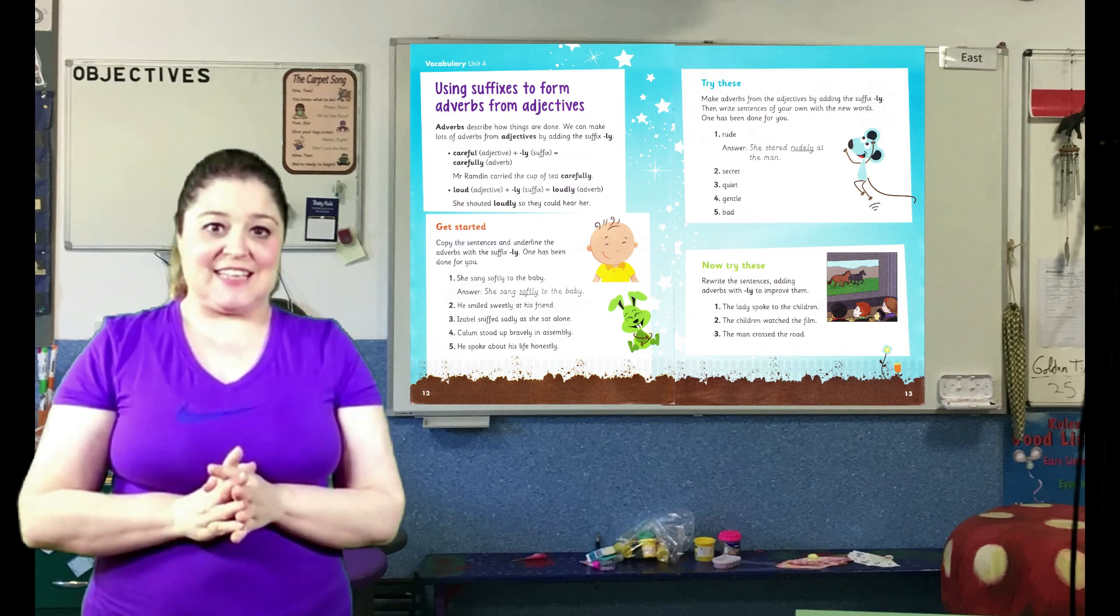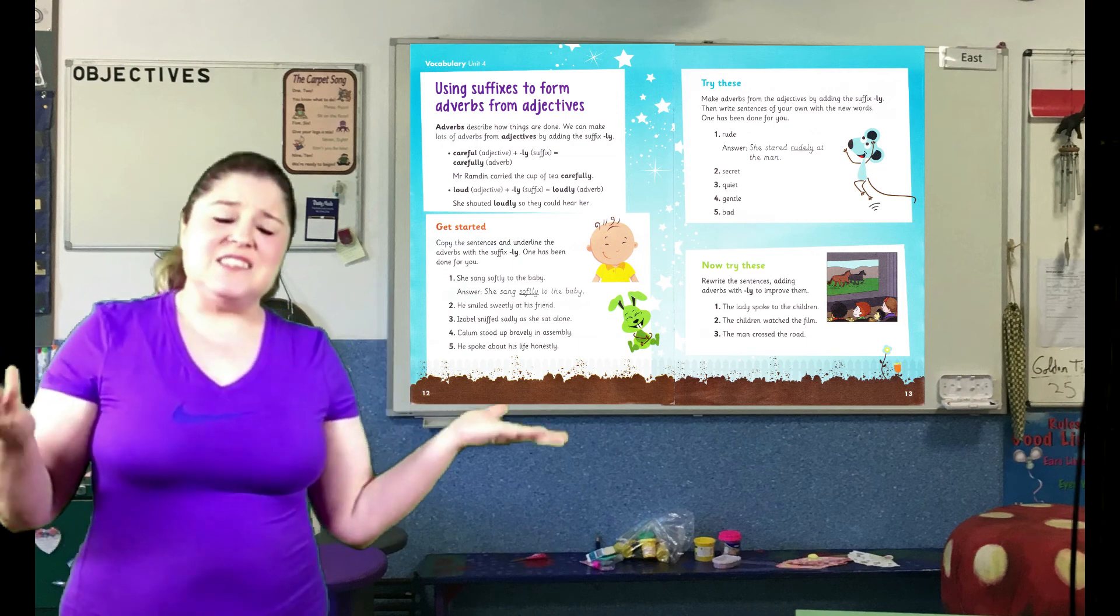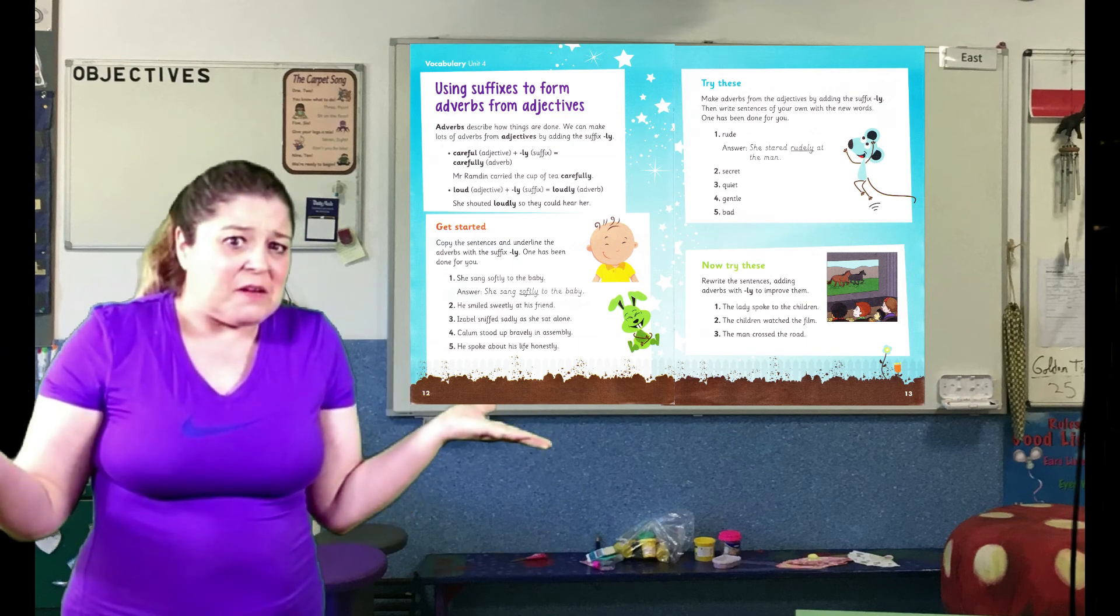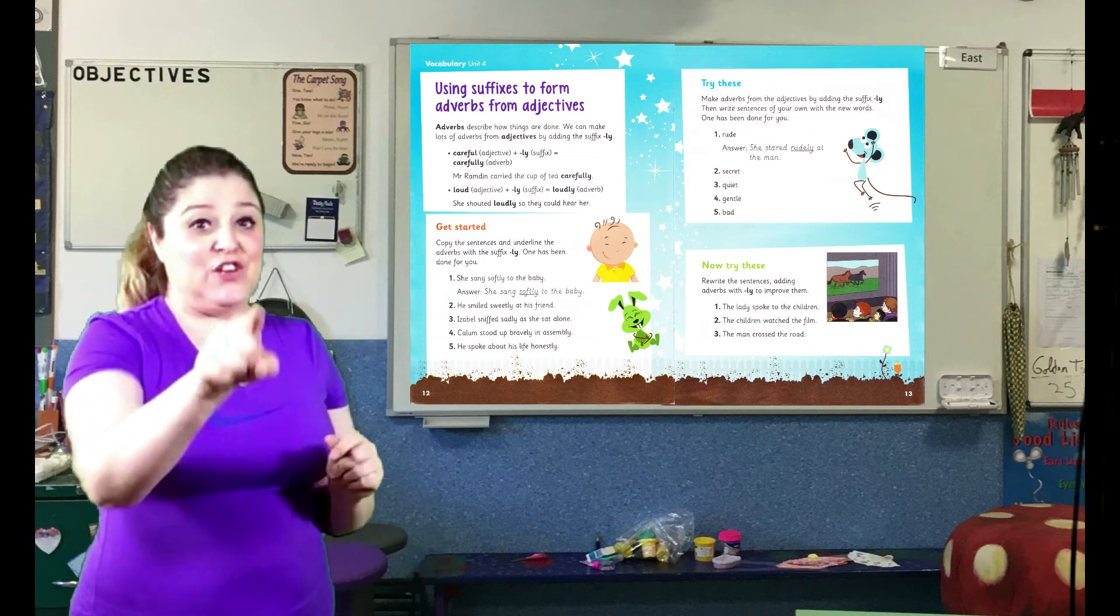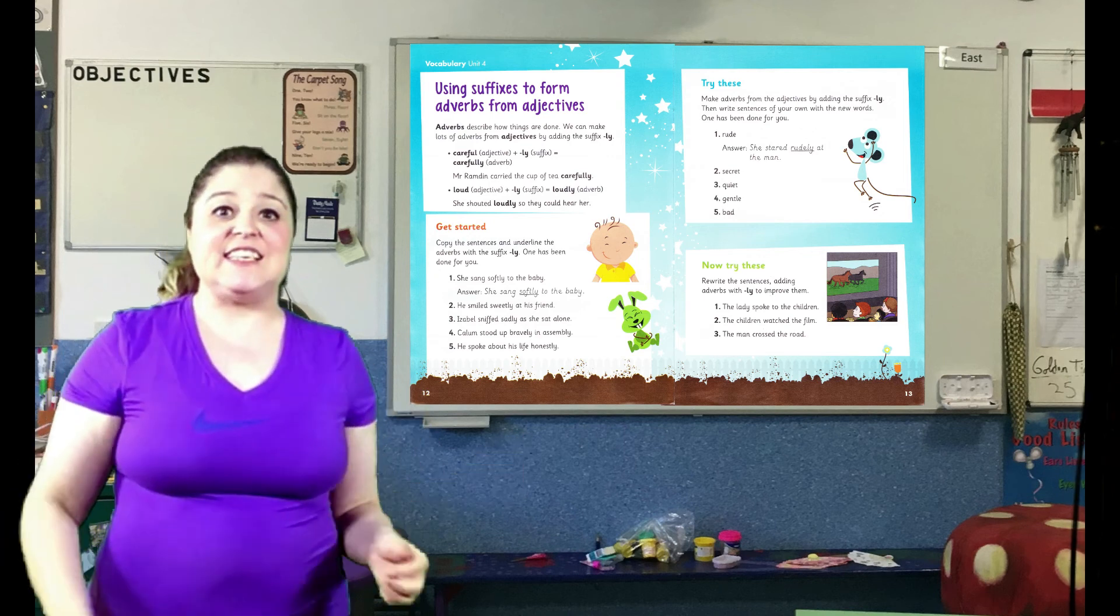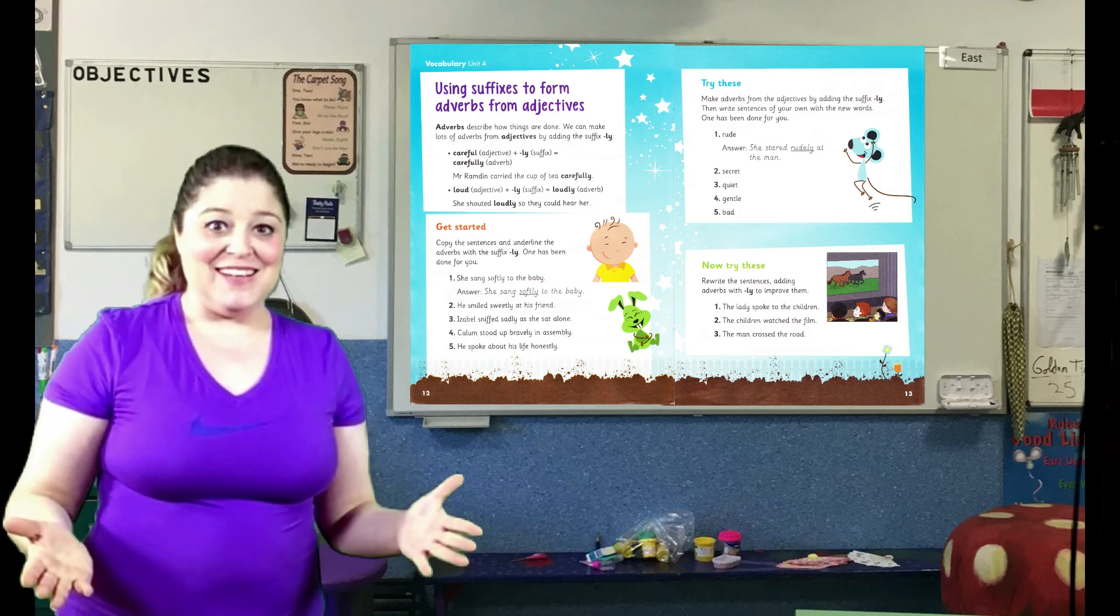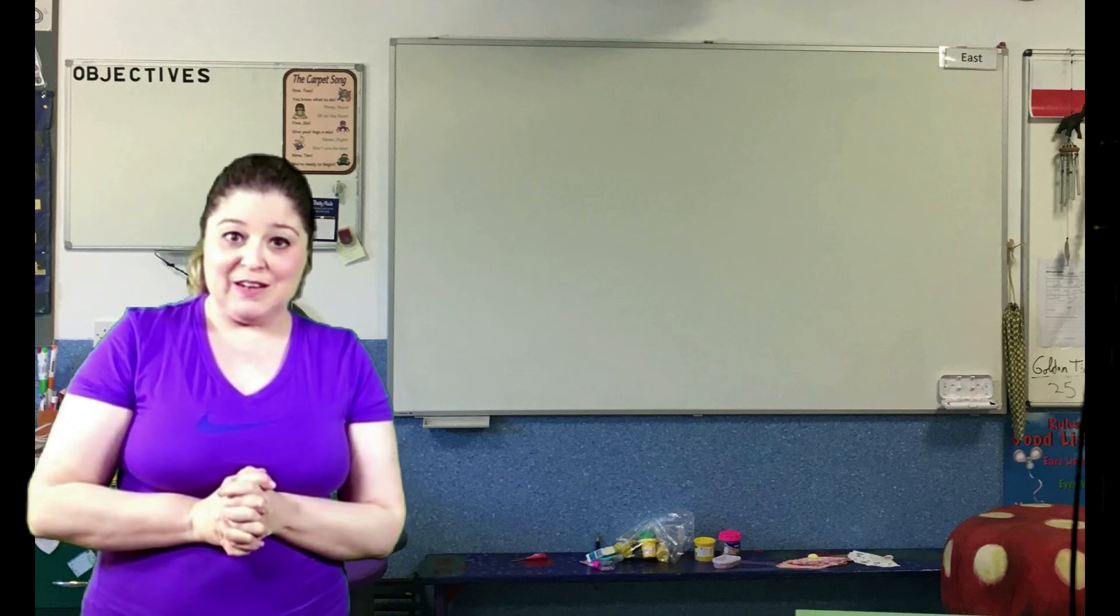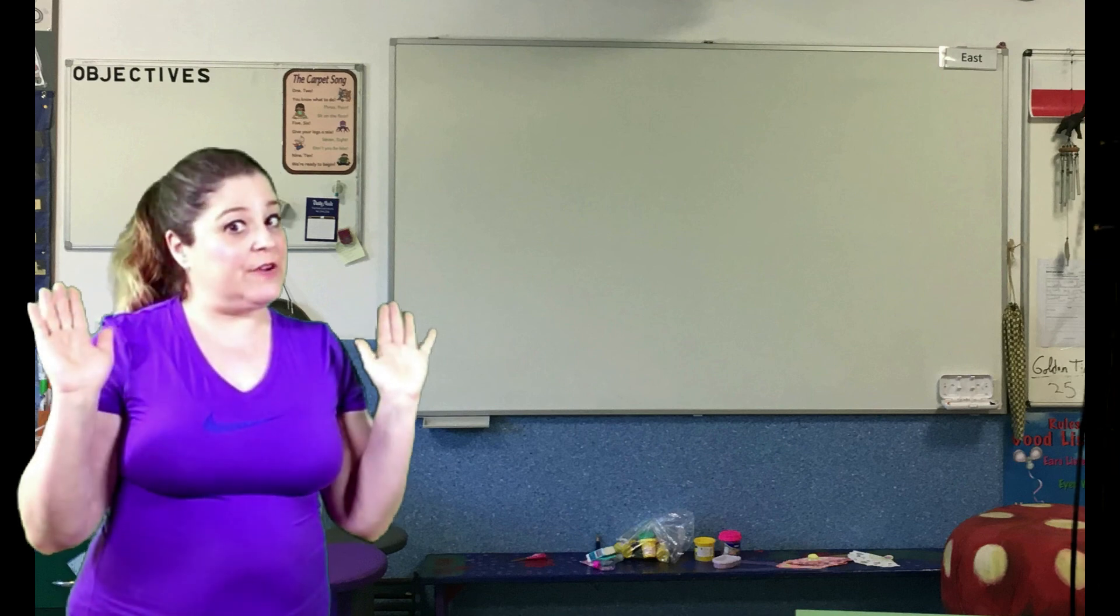Let's look at the last exercise. The now try these. In the now try these, you have sentences. But, the sentences are a bit boring. There's no adverbs in them. For the now try these, you think of your own adverbs and write the sentences with an adverb in each one. Those are your exercises. Do them in your purple copy book. Don't forget the date, the title, and the page number. Although, I really shouldn't have to still be reminding you of those things.